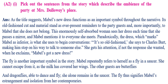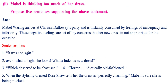Next activity: Mabel is thinking too much about her dress. Propose five sentences supporting this statement. Answer: Mabel Warning arrives at Clarissa Dalloway's party and is instantly consumed by feelings of inadequacy and inferiority. These negative feelings are set off by concern that her new dress is not appropriate for the occasion. Sentence one: 'It was not right.' Sentence two: 'What a fright she looks! What a hideous new dress.' Sentence three: 'Which deserved to be chastised.' Sentence four: 'Horror — idiotically old-fashioned.' Sentence five: When stylishly dressed Rose Shaw tells her the dress is perfectly charming, Mabel is sure she is being mocked.